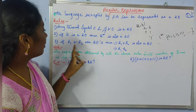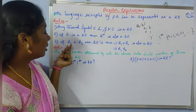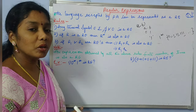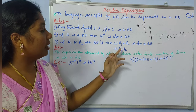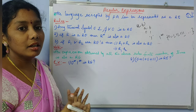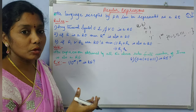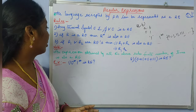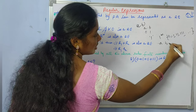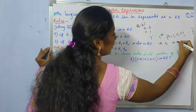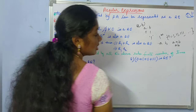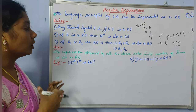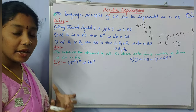Next, coming to rule 3: if r1 and r2 are regular expressions, then their union r1 plus r2 is also a regular expression, and their concatenation r1 dot r2 is also a regular expression. So if there are two regular expressions r1 and r2, their union is also a regular expression and their concatenation is also a regular expression. For example, if a is a regular expression and b is a regular expression, then a plus b is a regular expression and a·b is a regular expression. An expression obtained by applying all the above rules a finite number of times is also a regular expression.